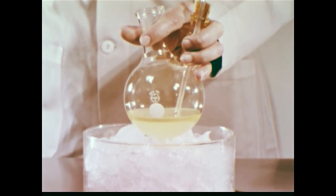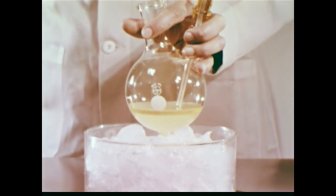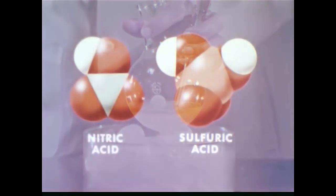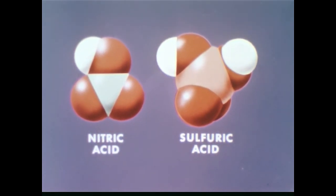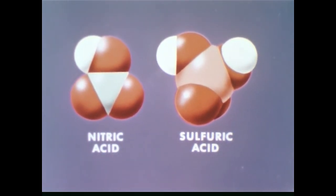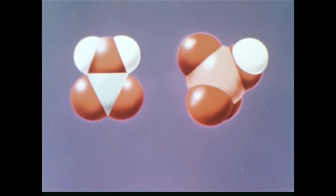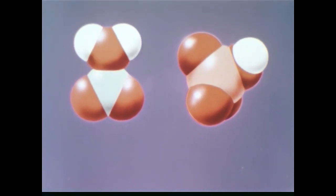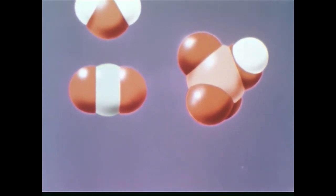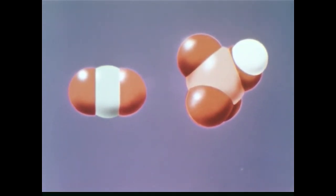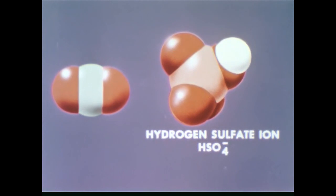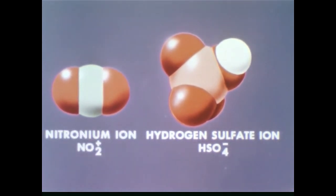Let's review what has taken place in the preparation of nitrobenzene using animated models. In the first step, nitric acid acts as a base, accepting a proton from sulfuric acid. The resulting complex splits out water. In the solution we now have two ions: a hydrogen sulfate ion, HSO4−, and a nitronium ion, NO2+.